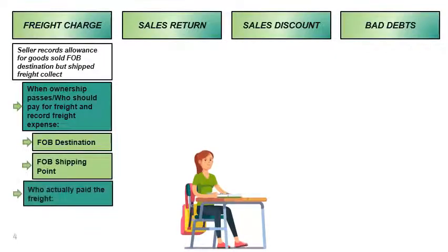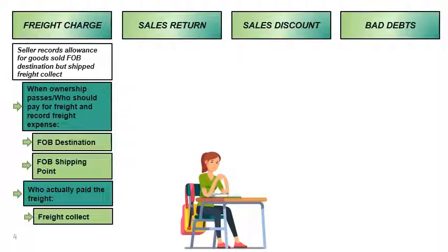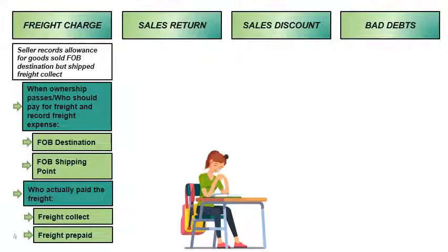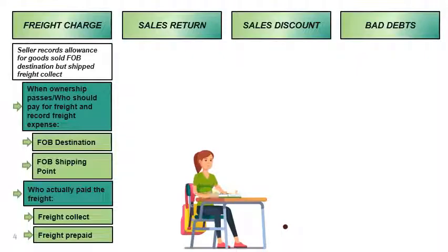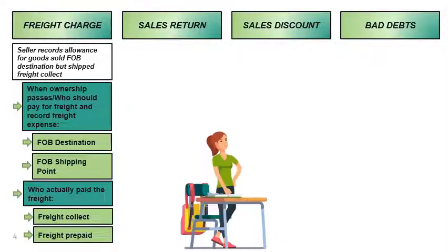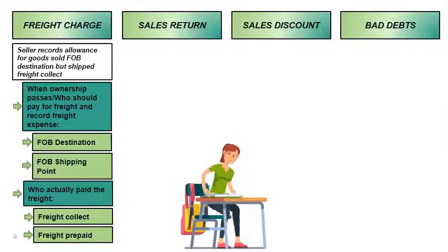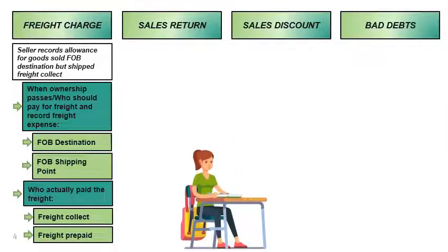However, the owner may not be the one who actually pays for the freight. The freight payment terms may be either freight collect or freight prepaid. Freight collect means the buyer pays for the freight, while freight prepaid means the seller pays for the freight. In an FOB destination freight collect arrangement, the seller is supposed to pay for the freight, but it is the buyer who actually pays for the freight. Hence, an allowance for freight charge is recorded by the seller to bring down the related accounts receivable to net realizable value.